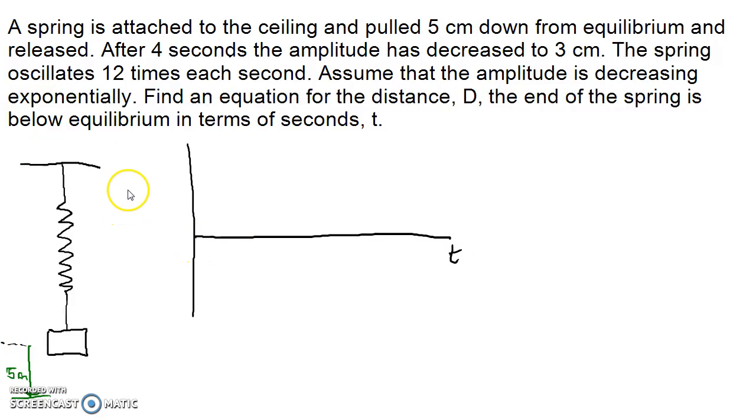So there's time and here's my distance. Now we have to be a little careful here. This is a distance this end of the spring is below the equilibrium, and so here we're five centimeters below, and so we start out with D being five. It's kind of a weird down is positive situation here.